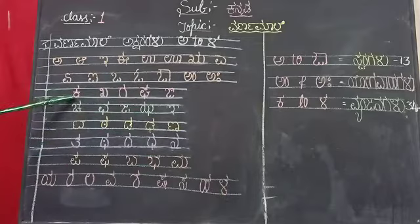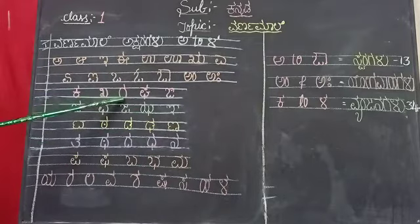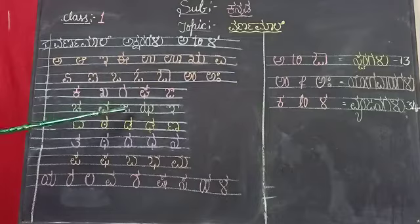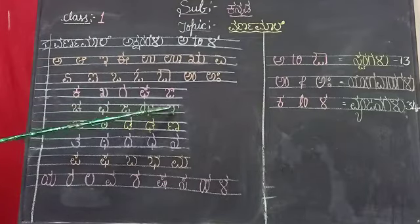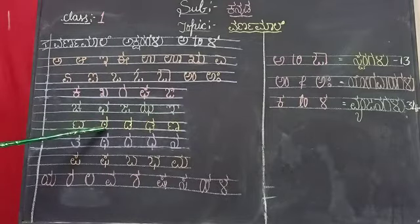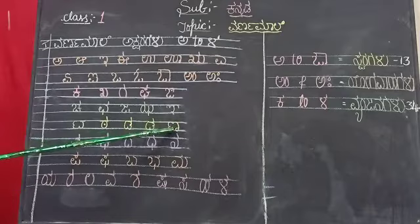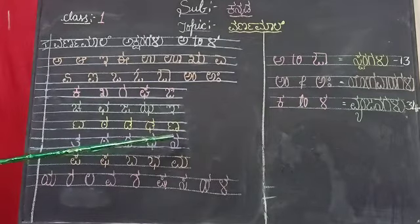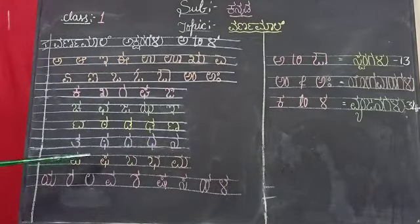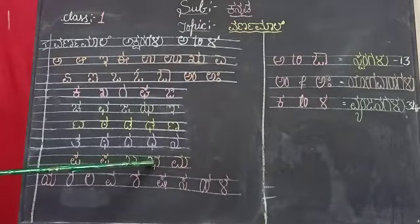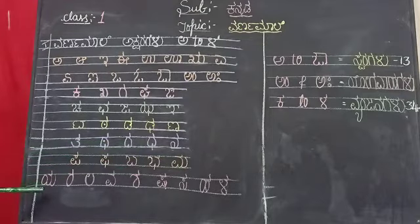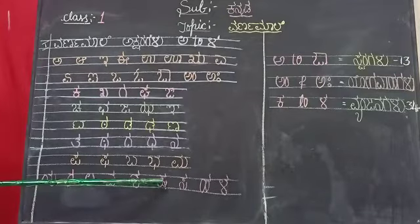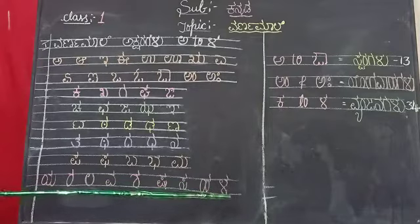I will revise once. Ka, K, G, G, G, Nya, Cha, Cha, Ja, J, Nya, Ta, Tha, Da, Dha, Na, Ta, Tha, Da, Dha, Na, Pa, Pha, Ba, Bha, Ma, Ya, Ra, La, Va, Sa, She, Sha, Sa, Ha, La.